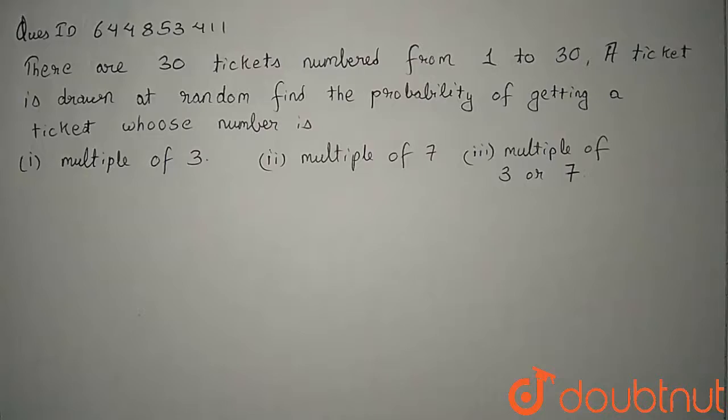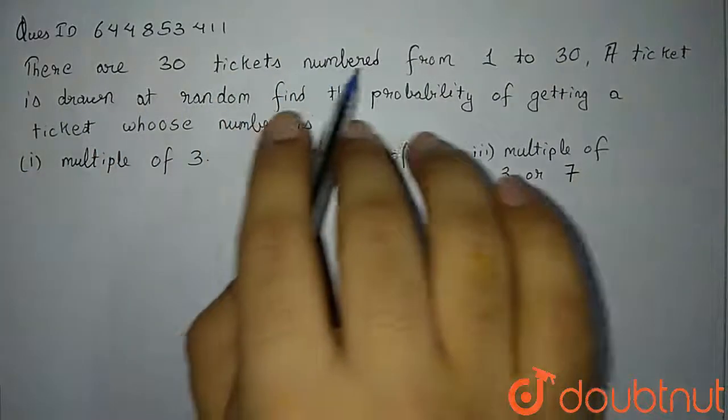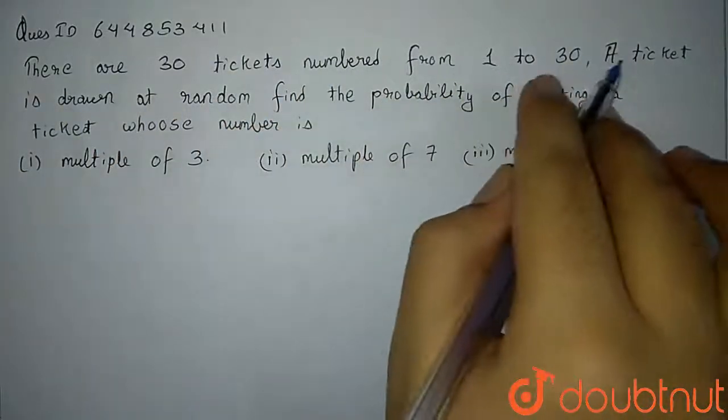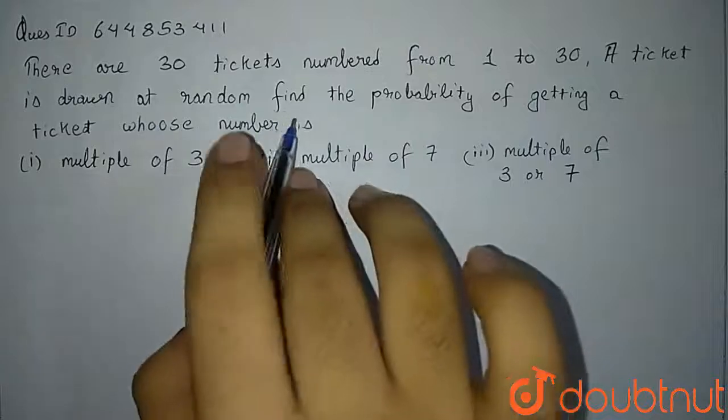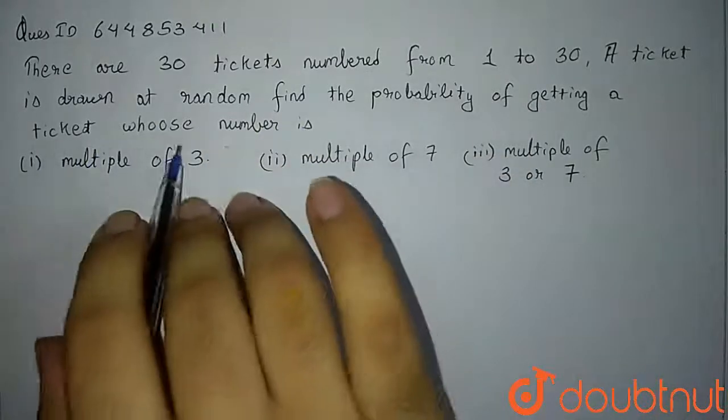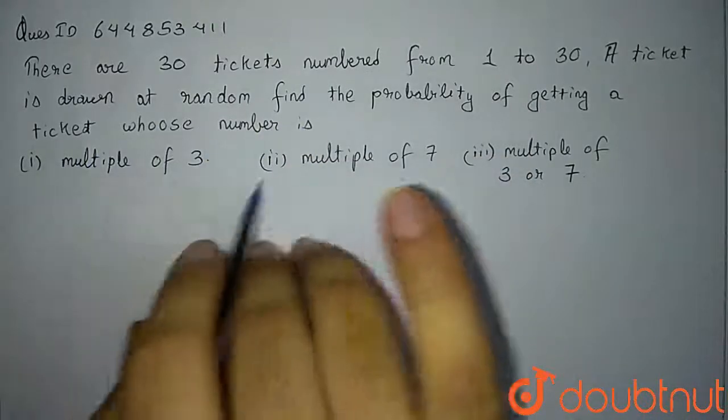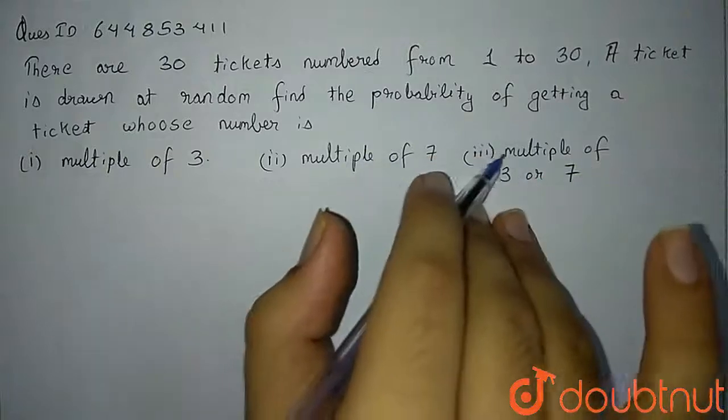The question is: there are 30 tickets numbered from 1 to 30. A ticket is drawn at random. Find the probability of getting a ticket whose number is a multiple of 3, multiple of 7, and multiple of 3 and 7.